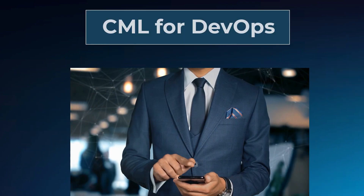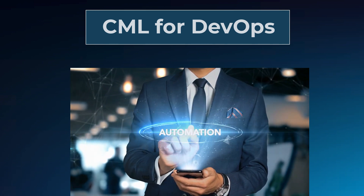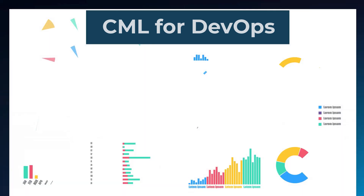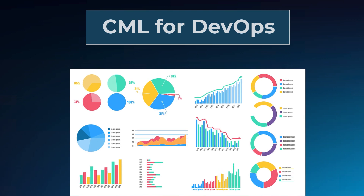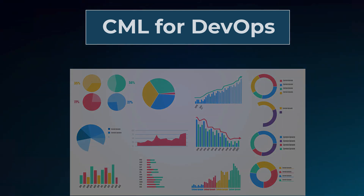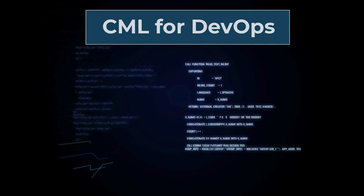CML is fantastic for DevOps because with it, we can update, test, and maintain our networks and configurations with automation. As developers continue to implement DevOps principles and practices, the legacy methods of manual configurations, testing, and operations are a relic of the past. CML helps break down the barriers between the dev and ops silos by making it possible to build and test our networks at light speed based on a programmatic source of truth.